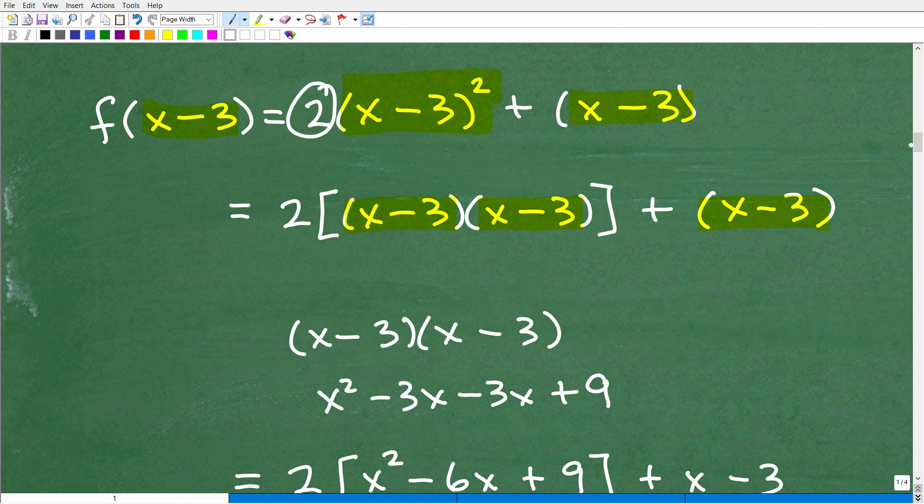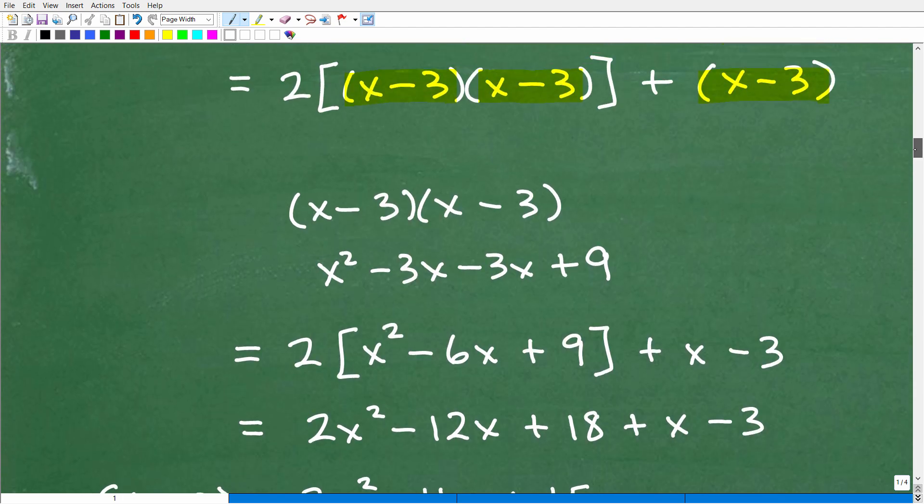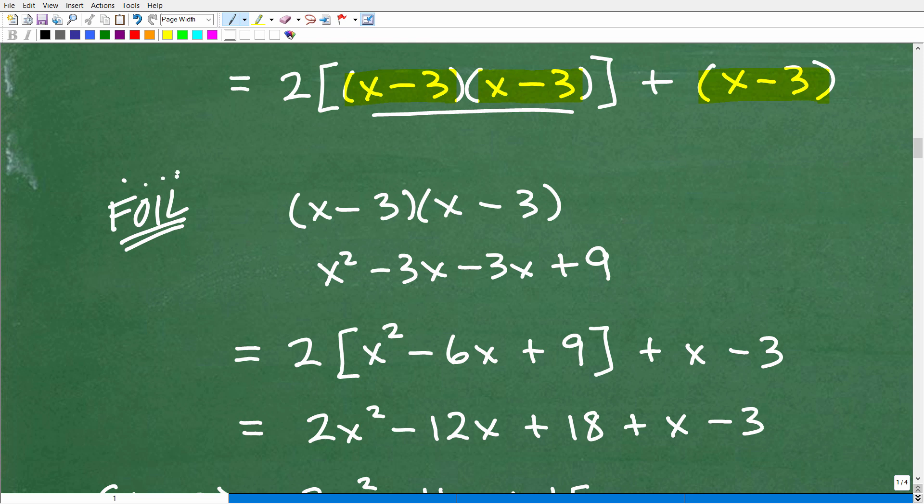So x minus 3 times x minus 3, I get that product, and then I multiply it by 2. And then I can add that x minus 3. That is the setup, and now we're going to use our algebra skills and figure out what x minus 3 times x minus 3 is. This is a good opportunity to use your FOIL method, first, outer, inner, last. We're multiplying binomials here.